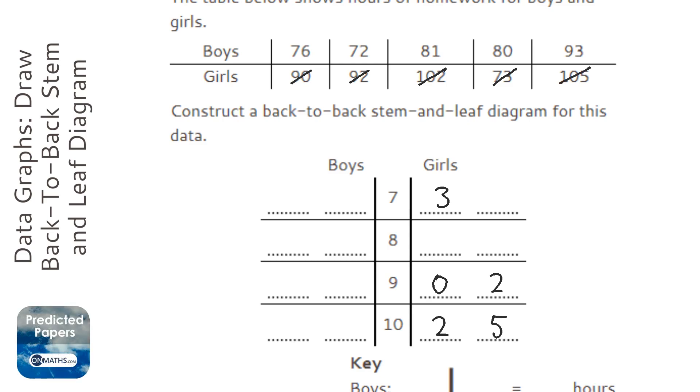I'm going to do the same with the boys. But people get confused because they think that the smaller number goes on the left. It doesn't - the smaller number goes closest to the middle. The smallest number for the boys is 72, so the 2 goes here closer to the middle. Then 76, so 6 goes here. Then 80, so 0 goes there. Then 81, and then 93. It should have the smaller numbers closest to the middle, and for the boys, obviously, it's the other way around to the girls.